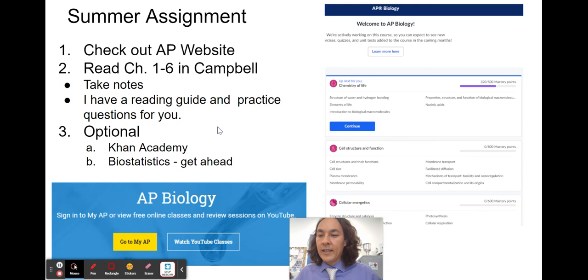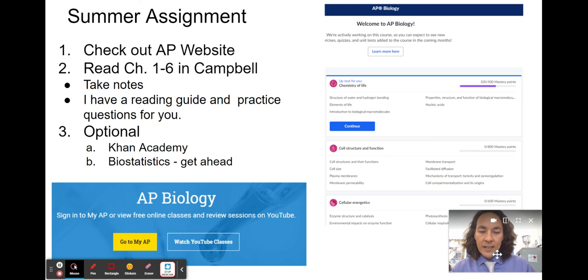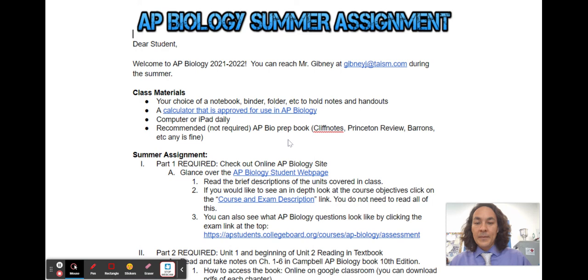And I also have my AP videos for unit one and for cells. You'll be able to also get some practice on Khan Academy if you'd like, and you can get ahead if you would like to, by looking at biostatistics. The summer assignment is located in Google classroom. And please email me if you're confused at any time, and I will go over it with you.